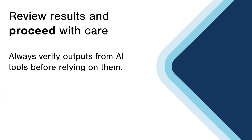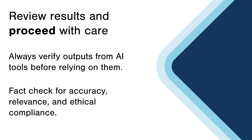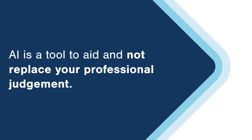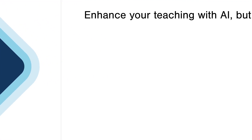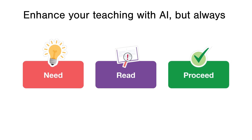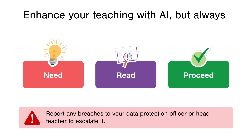Finally, review results and proceed with care. Always verify outputs from AI tools before relying on them — fact-check for accuracy, relevance, and ethical compliance. Remember, AI is a tool to aid and not replace your professional judgement. By following these steps you can ensure the safe and effective use of AI in your classroom. If you have accidentally input any personal data, it may be a data breach and you should inform your data protection officer or head teacher to escalate it.